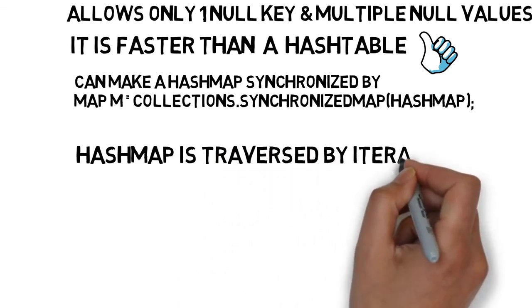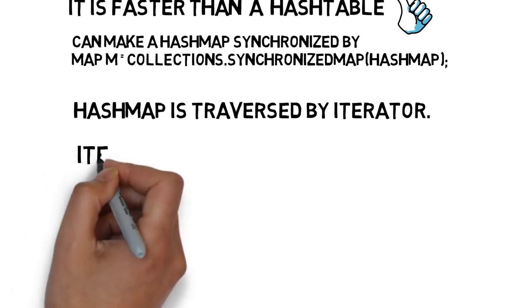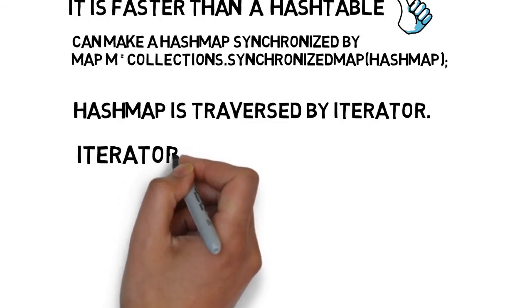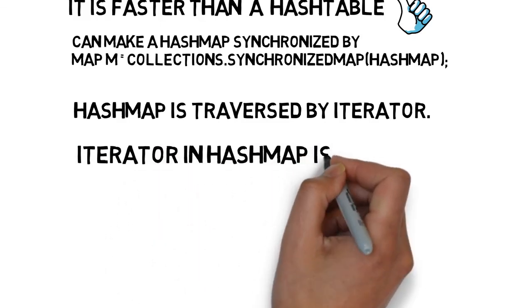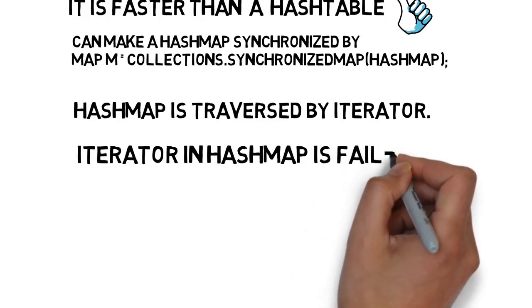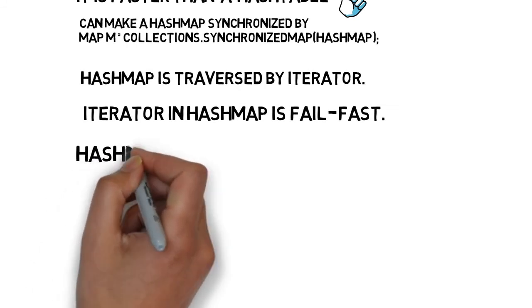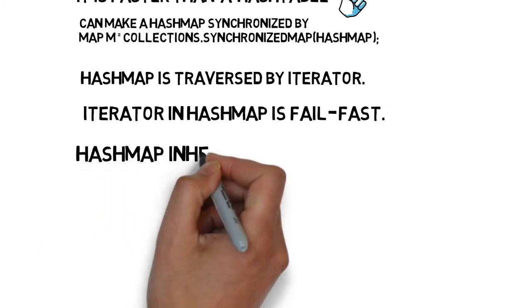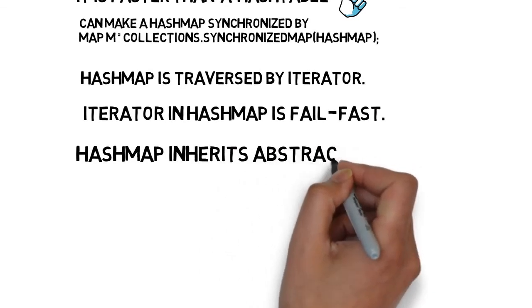Hash map is traversed by iterator. Iterator in hash map is fail fast. Hash map inherits abstract map class.